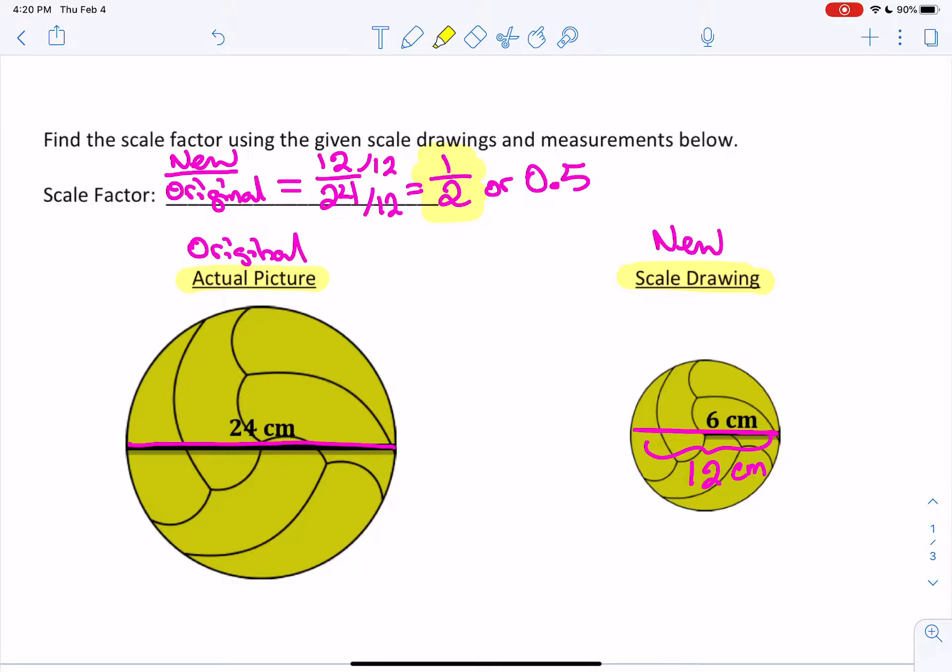Okay? Now, notice when our image shrank and was smaller, it's because the scale factor now was less than one. It was a half. Okay? So remember, if your scale factor is greater than one, your image enlarges. It gets bigger. If your scale factor is less than one, basically a fraction or a decimal, then it's going to shrink your image and make it smaller. It's going to be a reduction.